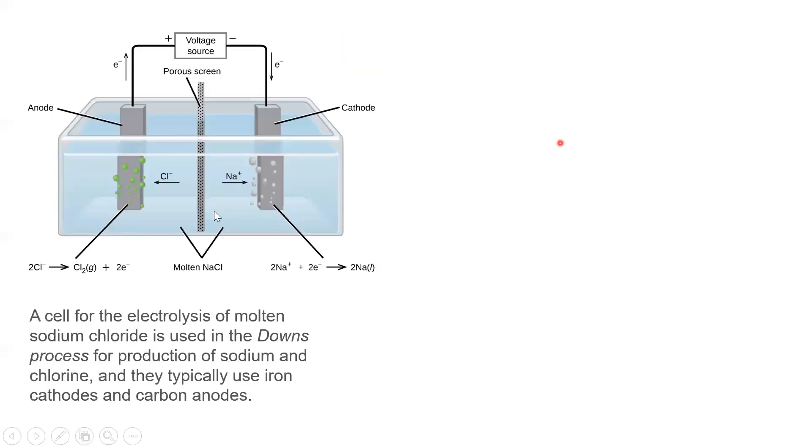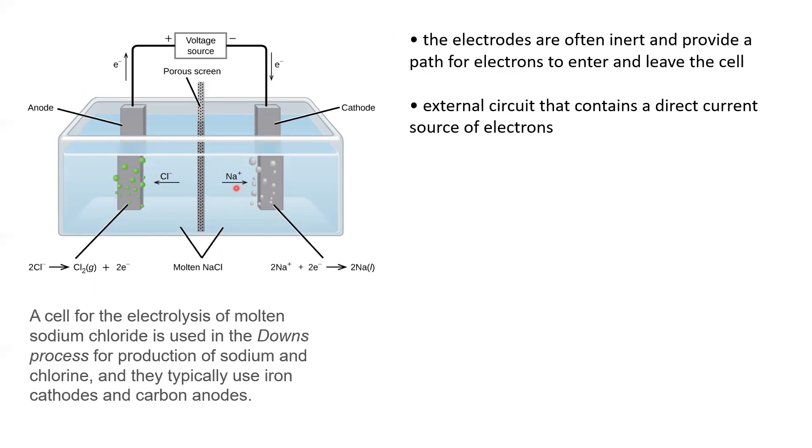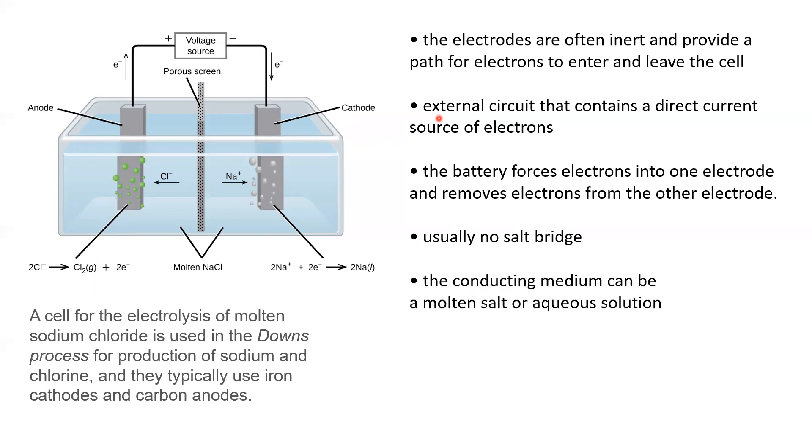If we were to look here, here's an example of an electrolysis process where we're going to be turning chloride ions into chlorine gas and sodium ions into sodium metal. We need an electrical source, an outside source, in order for this process to take place. And we don't have any salt bridge when we look at these electrolysis processes.